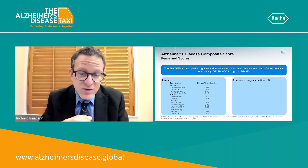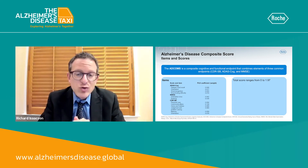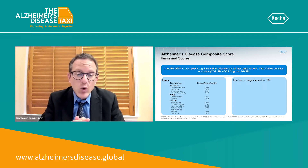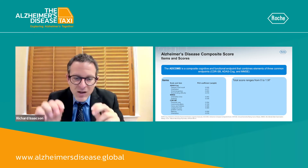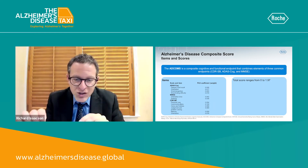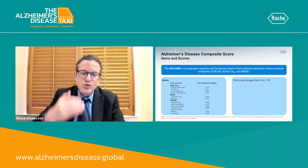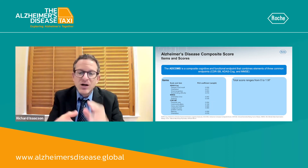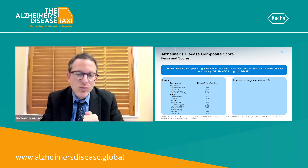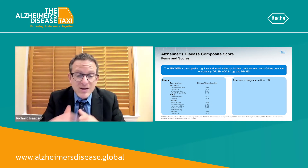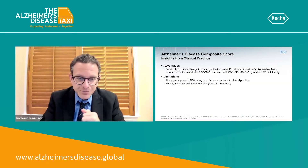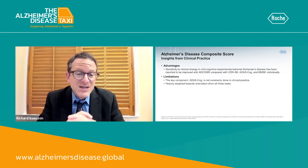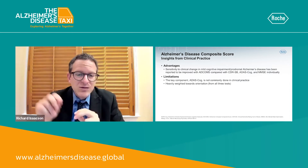However, it also includes these other important domains. The total score ranges from zero to 1.97, and the individual coefficient contributions are cumulative and added up to potentially score as high as 1.97 versus as low as zero. The advantage of this test is sensitivity to clinical change.